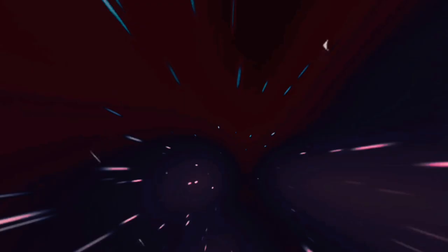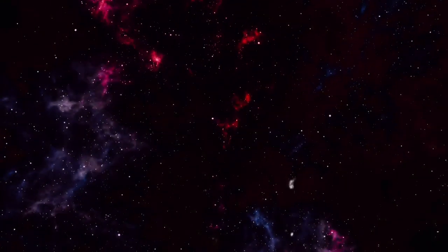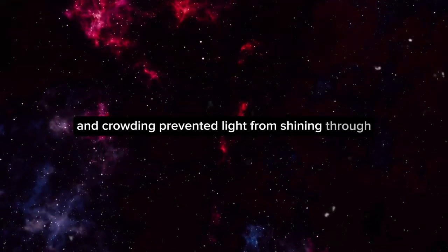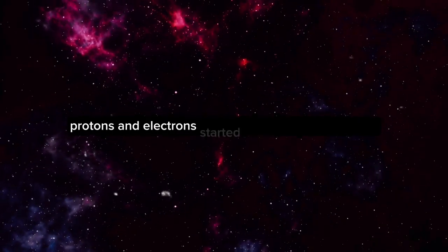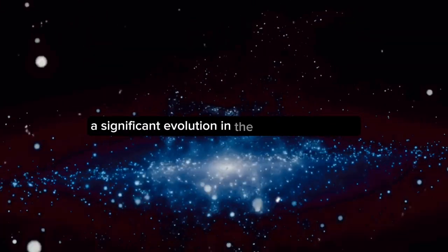The universe was a hot, dense soup of particles for nearly 400,000 years. The overflow of chaos and crowding prevented light from shining through. The universe expanded and cooled. Protons and electrons started to combine into neutral hydrogen atoms. This process is known as recombination, a significant evolution in the universe's history.